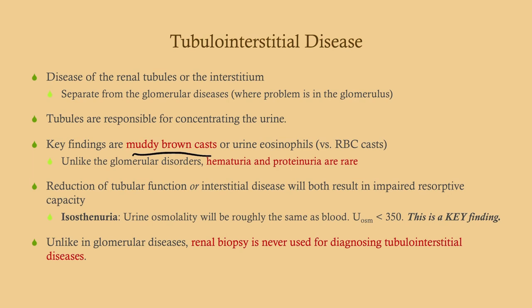Unlike glomerular disorders, hematuria and proteinuria are rare in tubulointerstitial disease — you won't see nephrotic-range proteinuria. There's a reduction of tubular function or interstitial disease, both resulting in impaired resorptive capacity. You can also get isostenuria, where the urine osmolality is roughly the same as the serum osmolality — a very important finding. Unlike glomerular diseases, renal biopsy is never used for diagnosis.